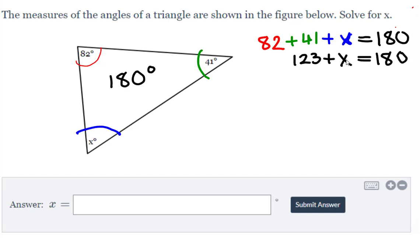so that's going to give me 123 plus x is equal to 180 degrees. And then I'd like to isolate x by subtracting 123 degrees, or 123 on each side.